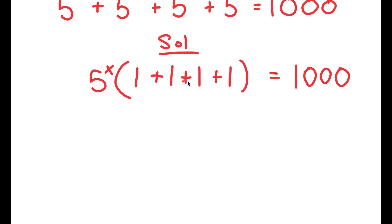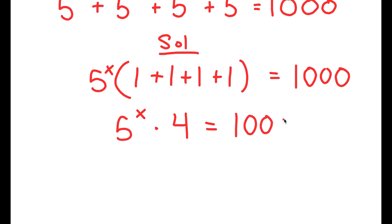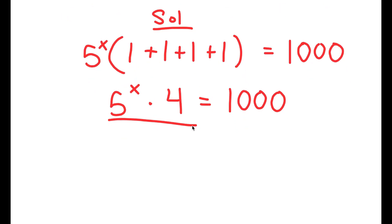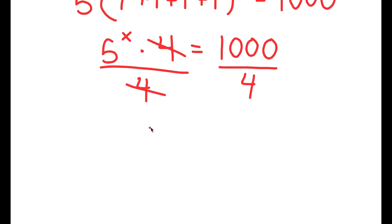And now, 1 plus 1 plus 1 plus 1 is 4, so I get 5 to the power of x times 4 is equal to 1,000. We want to isolate x, so I'm going to divide both sides by 4 — these two cancel out — and I get 5 to the power of x is equal to 1,000 divided by 4, which is 250.